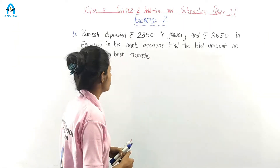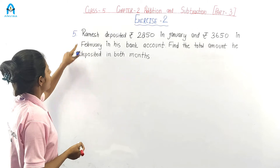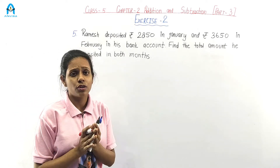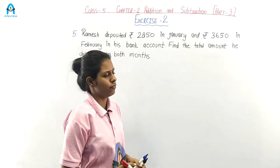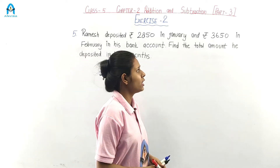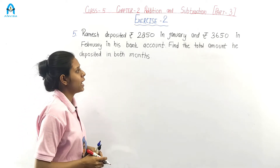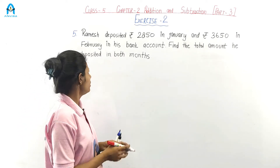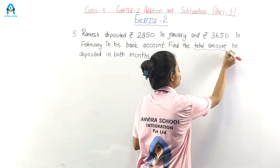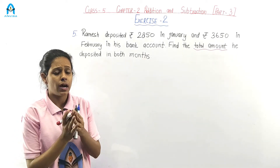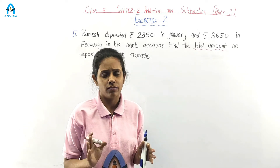Now let's go to question number 5. First read the question: Ramesh deposited Rs. 2,850 in January and Rs. 3,650 in February in his bank account. Find the total amount he deposited in both months. If someone asks about the total, we have to add.